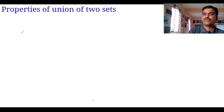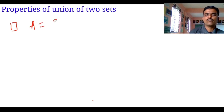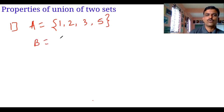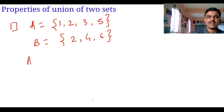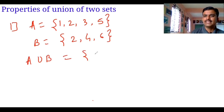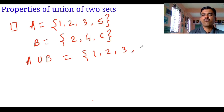So I'm taking the first property. A is equal to {1, 2, 3, 5} and B is equal to {2, 4, 6}. So I'm taking the union now. A union B is equal to — union means it is a collection — {1, 2, 3, 4, 5, 6}.